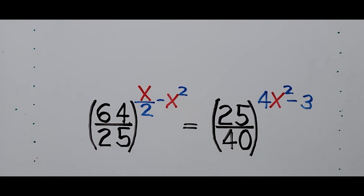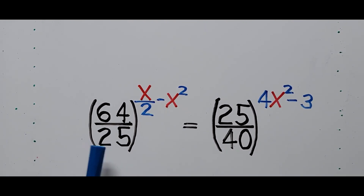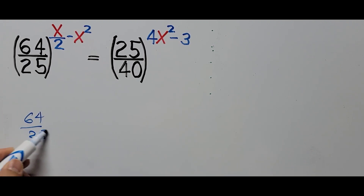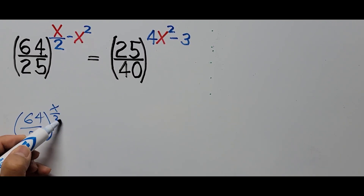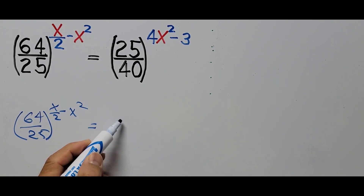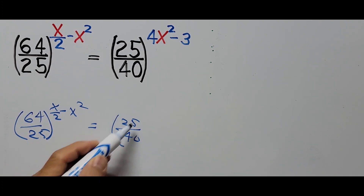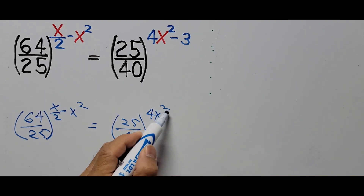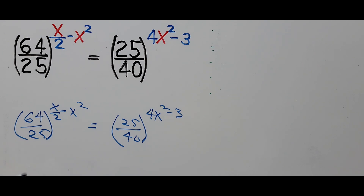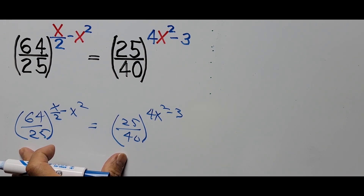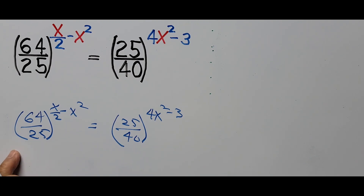If you notice, both bases on each side of the equation are in the form of a fraction. So we have to find a way to reduce those fractional bases into their lowest terms. Let's start by writing the equation again: 64 over 25, to the power x over 2 minus x squared, equals 25 over 40, to the power of 4x squared minus 3. Our next step will be to reduce these fractions to their lowest terms.